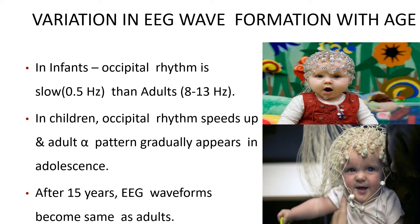The EEG waveforms at rest in humans vary with age. In infants up to one year, the occipital rhythm is slower than in adults. In children, the occipital rhythm speeds up and the adult alpha pattern gradually appears during adolescence. After 15 years of age, the EEG waveforms become almost the same as those of adults.